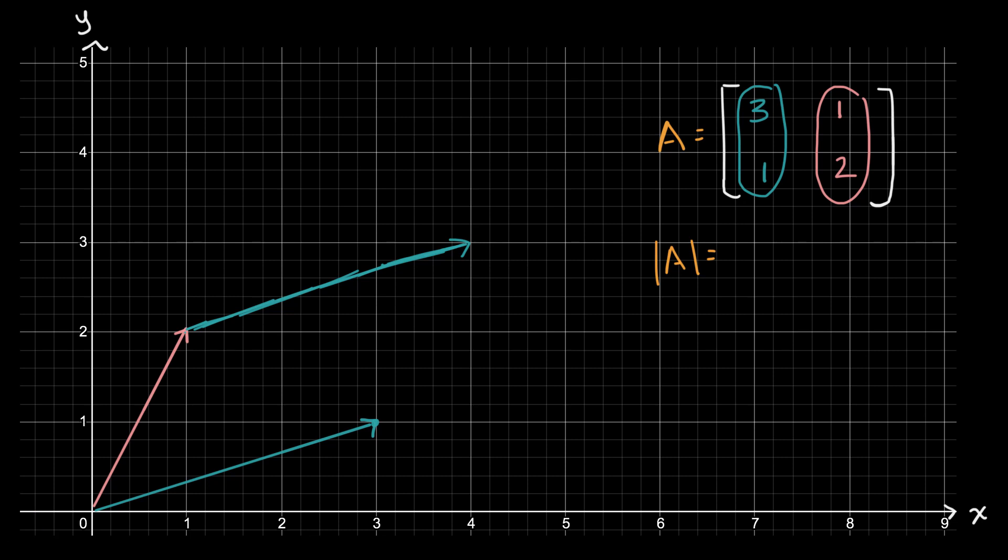And then if you were to take this pink vector and copy it and shift it up into the right, so its tail is at the head of the original blue vector, it's going to look something like that. And so you can see, you can use that technique to take any two vectors in the coordinate plane, and they will define a parallelogram. And it turns out that the area of this parallelogram is going to be equal to the absolute value of the determinant of this matrix here.